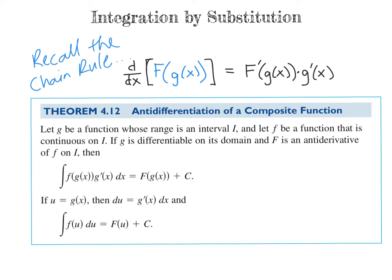We are also going to learn something called u-substitution, which is a simpler way to make the integrand a simpler-looking function. We call the g of x function the inside function u, and then we take its derivative du — that's the g prime part. Then we get the integral of f of u du, which is much simpler looking. We do use a change of variables, and in the end we have to back-substitute to get it back in terms of x. Halfway through the video we will see how we use this popular technique called u-substitution.